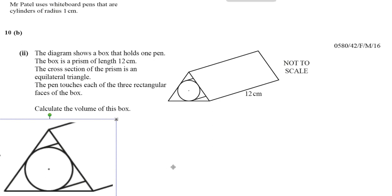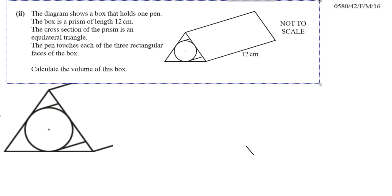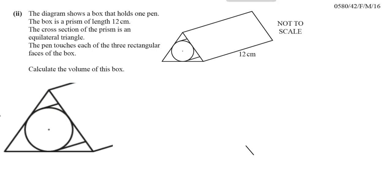Now what we have is a prism. The volume of a prism is given by the cross-sectional area times the height, or times how deep the shape goes in. It's the cross-sectional area, which is the area of this equilateral triangle, times how long the prism is.